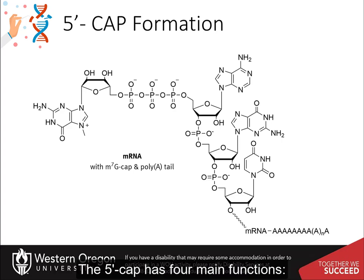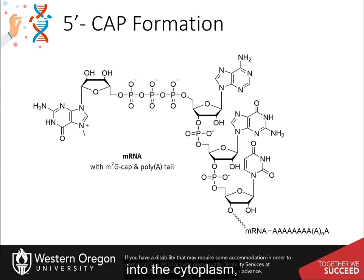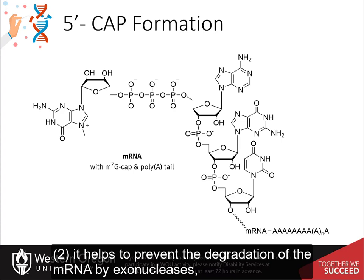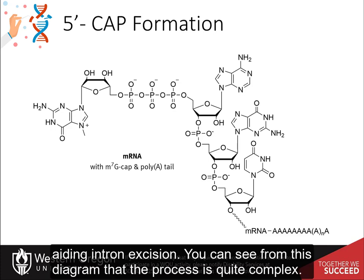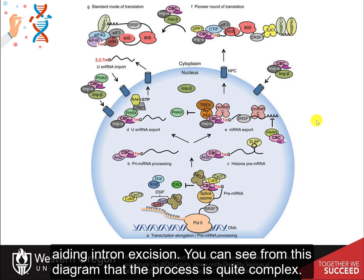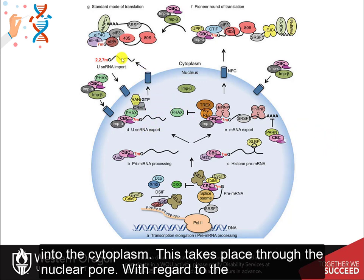The five prime cap has four main functions. It helps to regulate nuclear export of the messenger RNA from the nucleus into the cytoplasm. It helps to prevent the degradation of the messenger RNA by exonucleases, and it can help promote the translation process. It's also thought to have a role in aiding intron excision. Both the poly-A tail and the five prime cap are utilized to help translocate the messenger RNA from the nucleus into the cytoplasm, taking place through the nuclear pore.